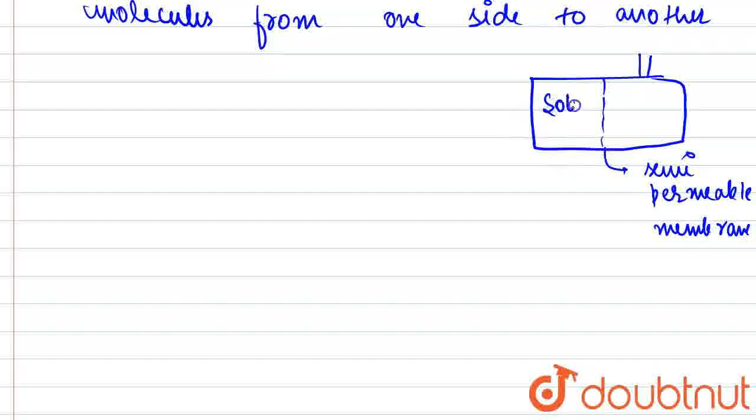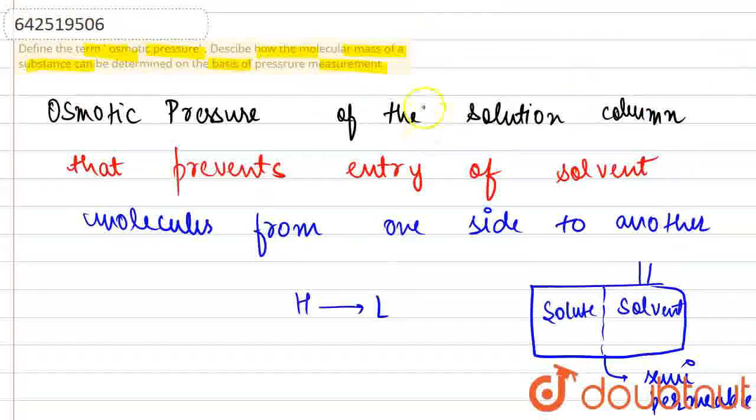On one phase we have the solute, on the other phase we have the solvent. Depending on the concentration, from high to low concentration, the molecules move. So this pressure that we have to measure that can prevent the entry of solvent molecules from one side to another, from high to low concentration, is what we call osmotic pressure.